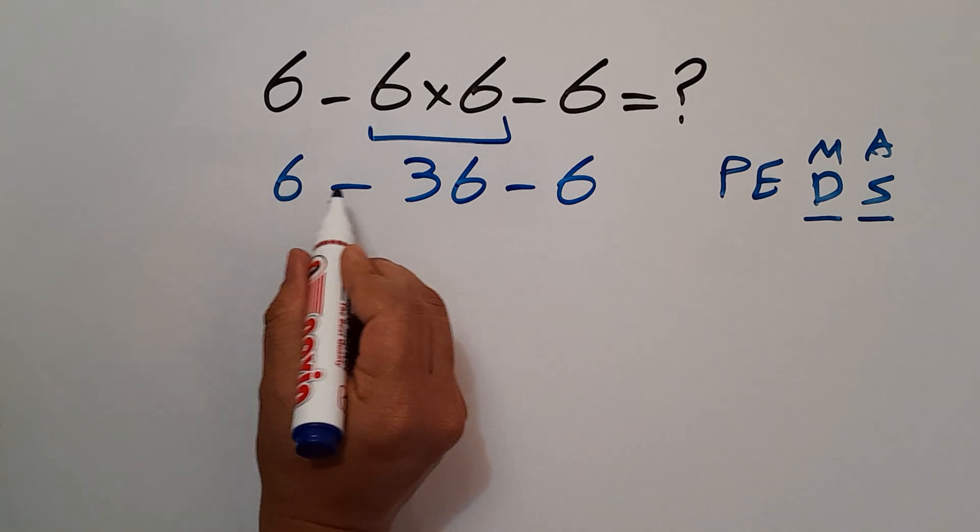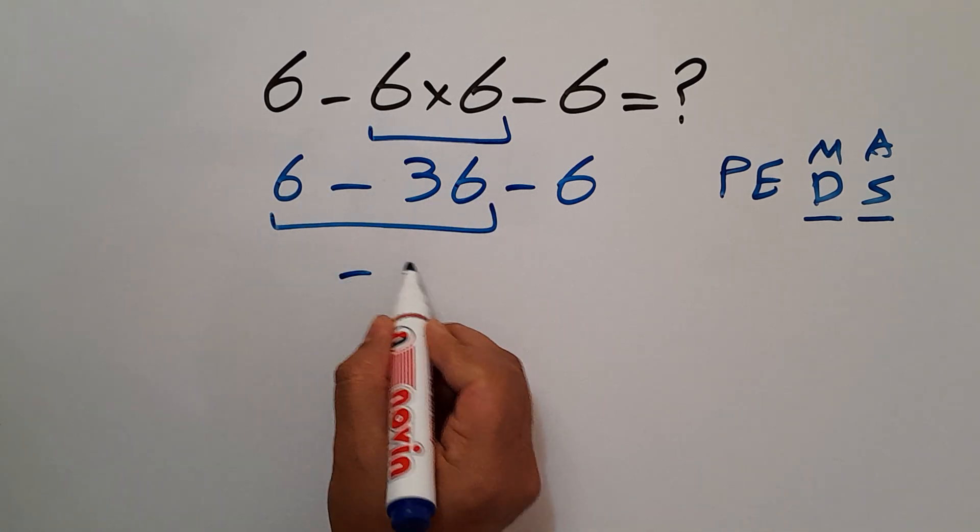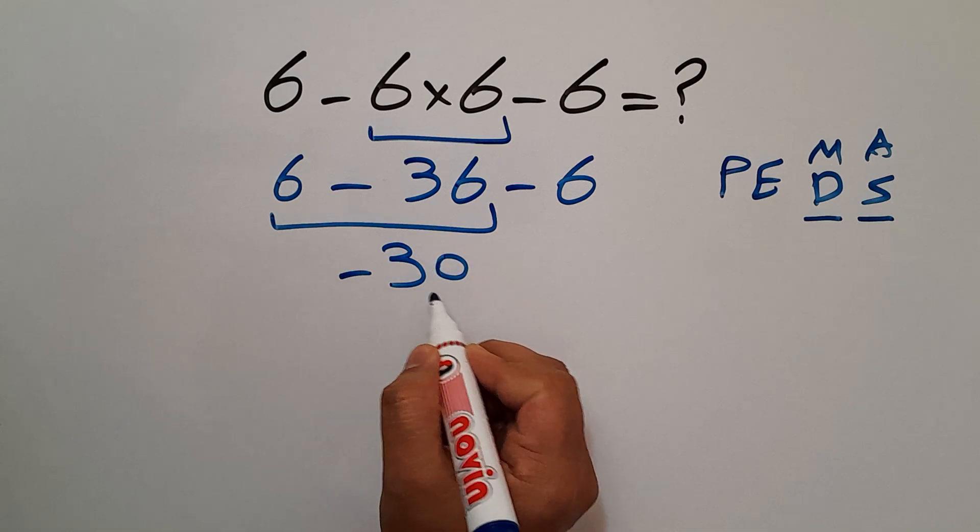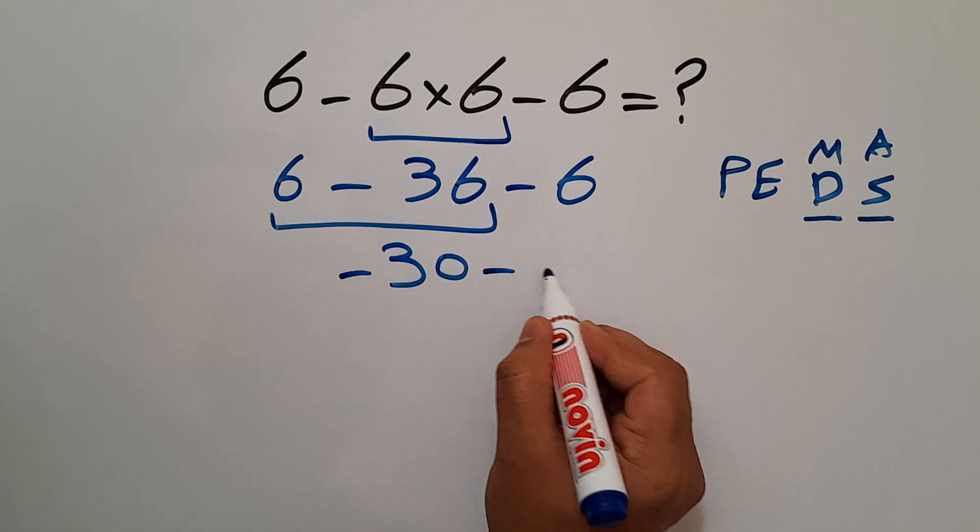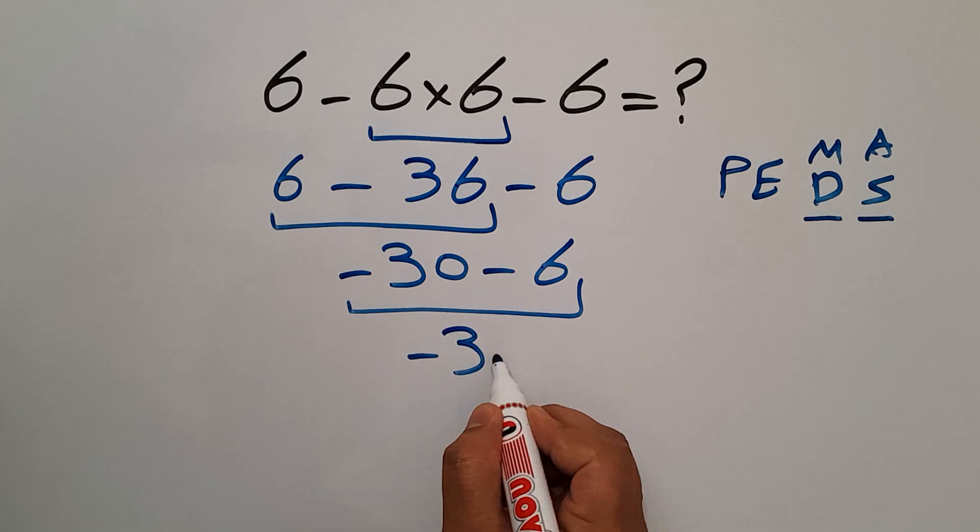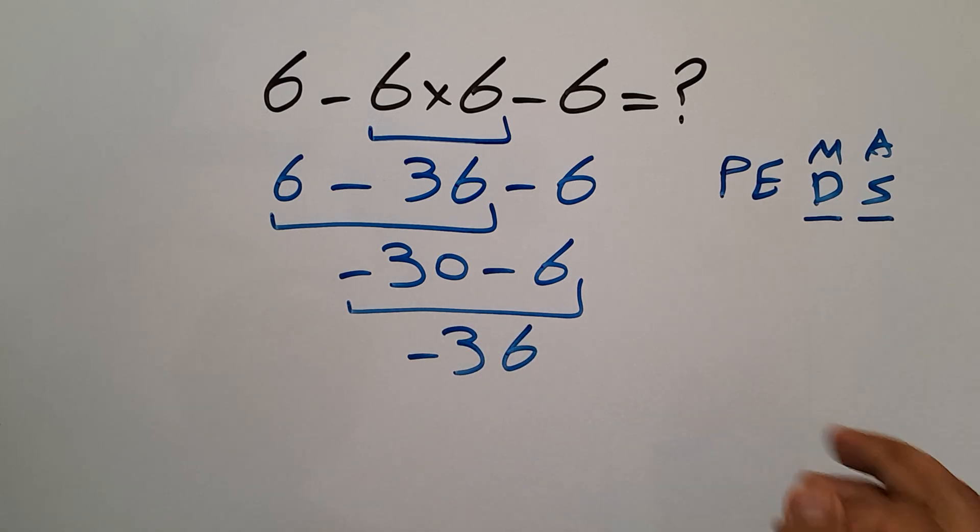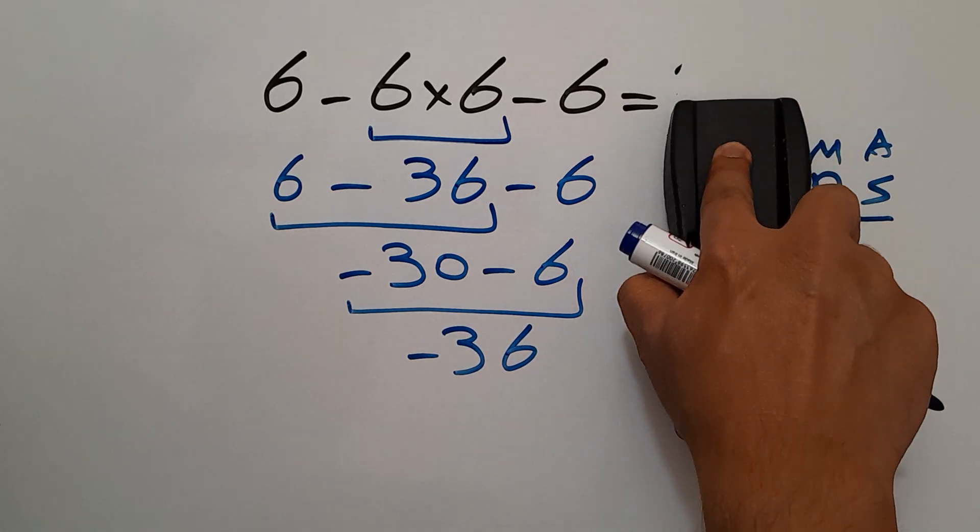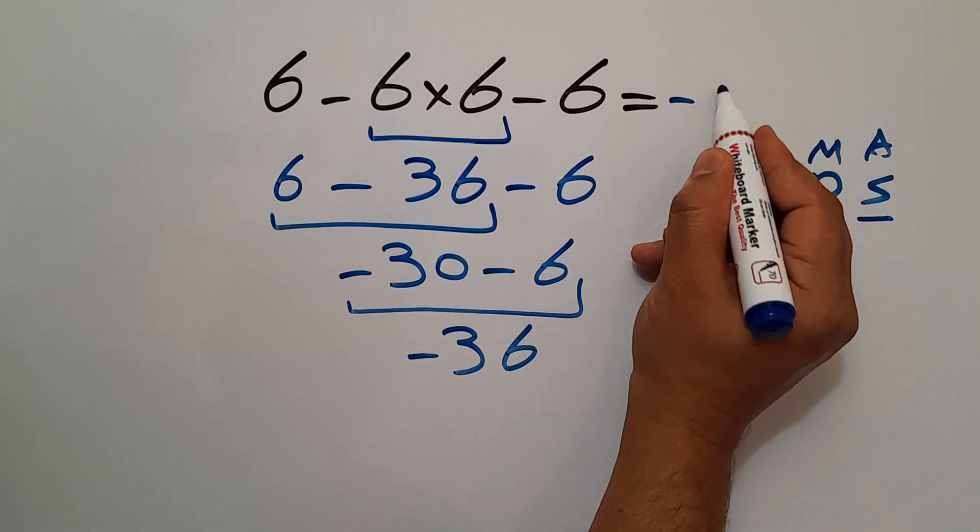Now, 6 minus 36 gives us negative 30. So negative 30 minus 6, which equals negative 36. So our final answer to this problem is negative 36.